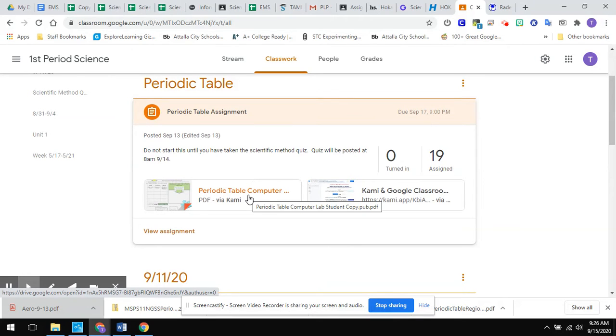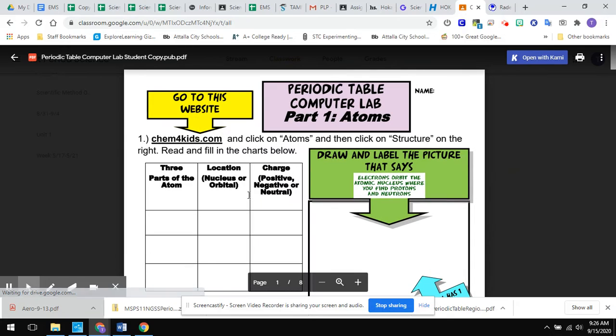You will be using Kami for this. So I have purchased a Kami account, so it is supposed to, if you open it through Google Classroom, add you to my license. There should not be an issue as long as you are going through a Chrome browser and you are opening this assignment up through Google Classroom. So when you click on this and go to open this, you should end up with this right here, open with Kami. And then once you open it with Kami, it's going to open it with the editing tools.